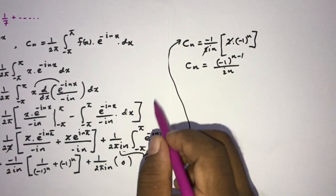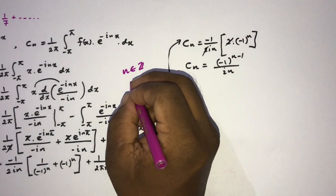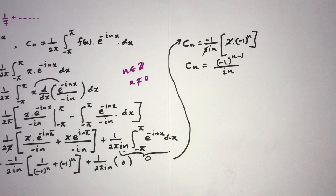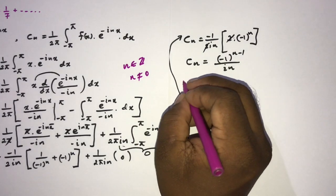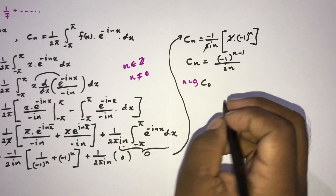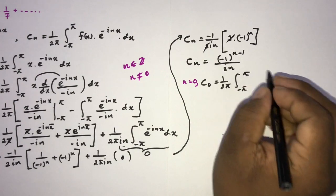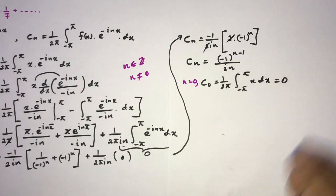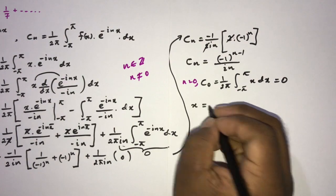This calculation holds for n an integer and n not equal to 0. What happens when n equals 0? When n equals 0, c_0 equals 1 over 2π times the integral from minus pi to pi of x dx, which equals 0. Therefore we can write the Fourier series representation of x.